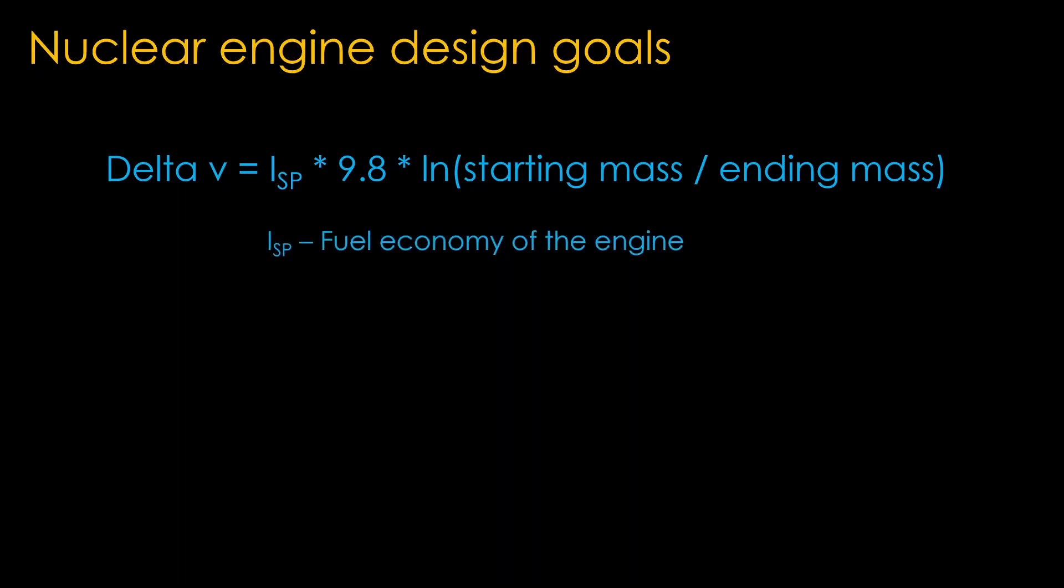The specific impulse, generally written as ISP, is a measure of the fuel economy of the engine, how much useful work is available for a given amount of propellant. Starting mass is the mass of the rocket or stage, all fueled up and ready to fly.